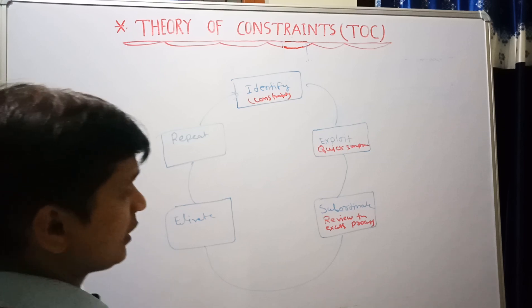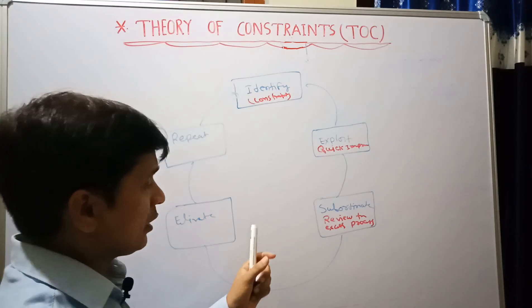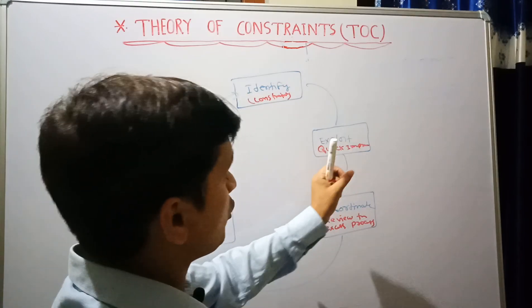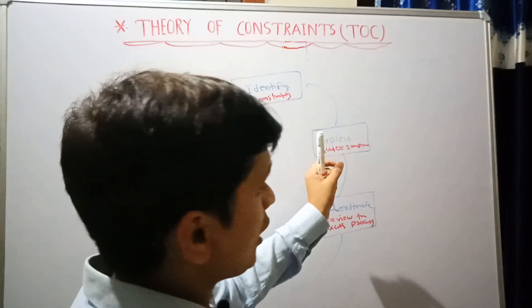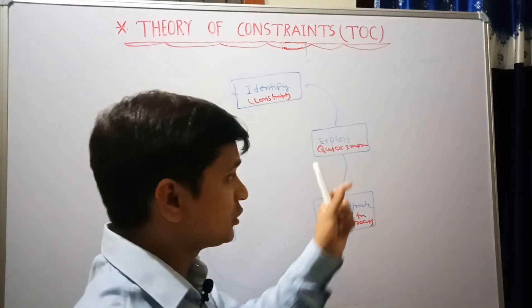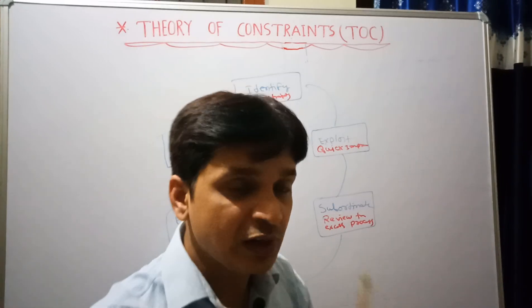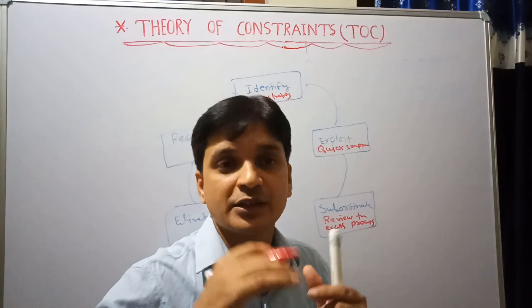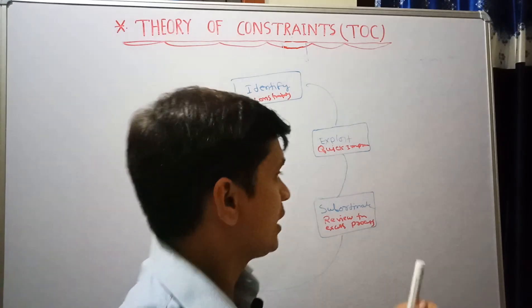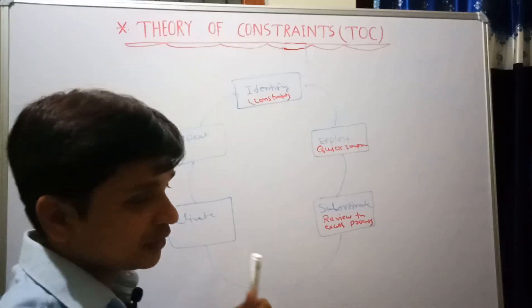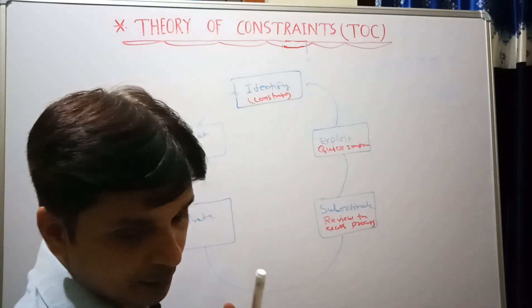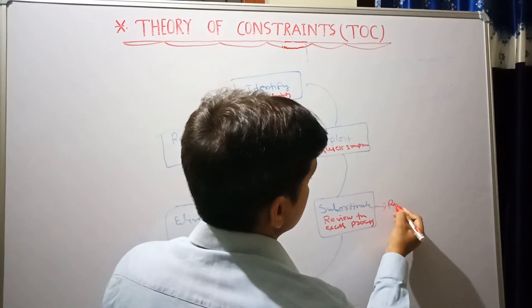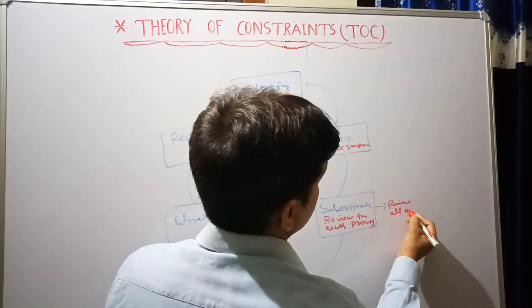The fourth step is Elevate. In the Exploit step, you need to take some quick improvement, but in this step you use only existing budget and existing resources — you don't need extra resources or extra budget for improvement. Subordinate means review all other activities in the process.